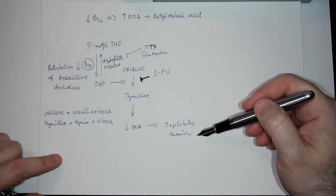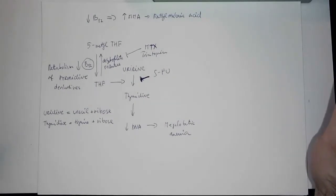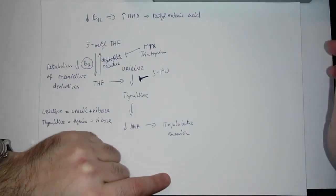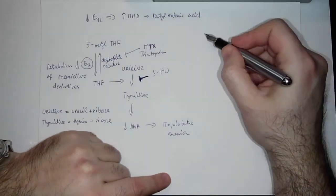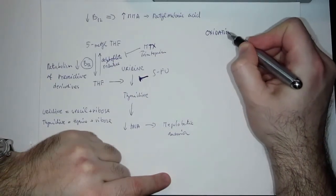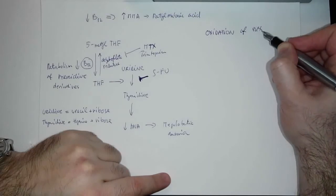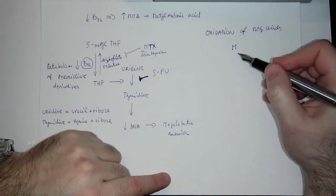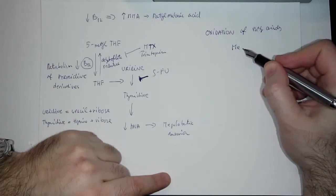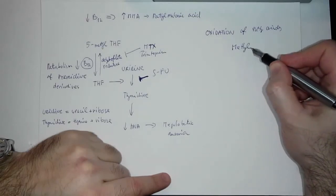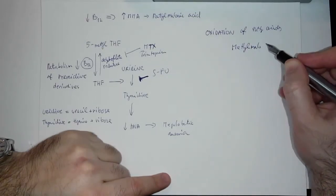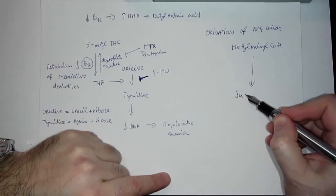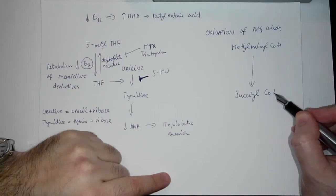But how is the MMA connected to this? It's a different process which is connected with the oxidation of fatty acids. If I want to be more specific, B12 is crucial in conversion of methylmalonyl coenzyme A.